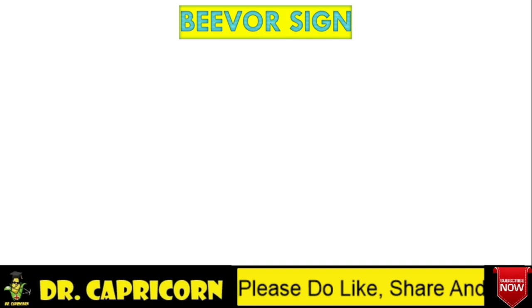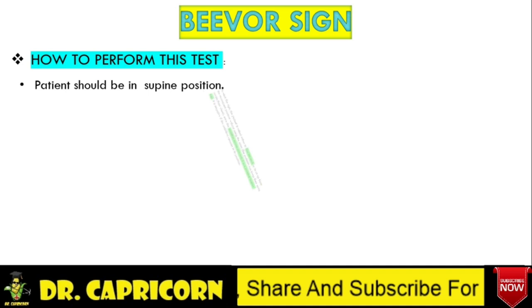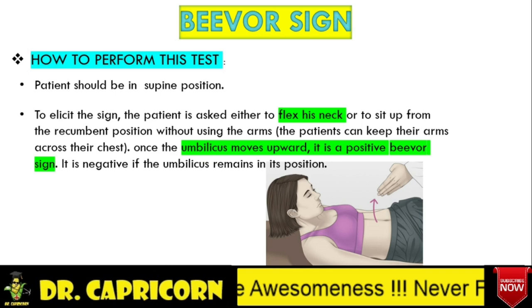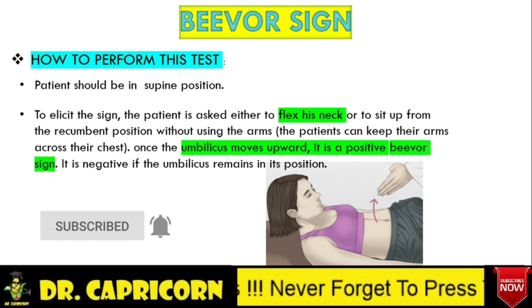Let's first see how we perform this test. We ask the patient to lie on a couch in a supine position, then ask the patient to flex his neck without using any kind of support by hands, simultaneously looking at the umbilicus to notice any changes in position. If the umbilicus moves towards the head end, this sign is considered positive. If there is no change in position of the umbilicus, then this sign is considered negative.